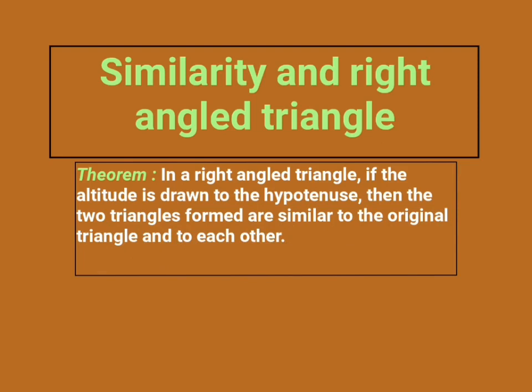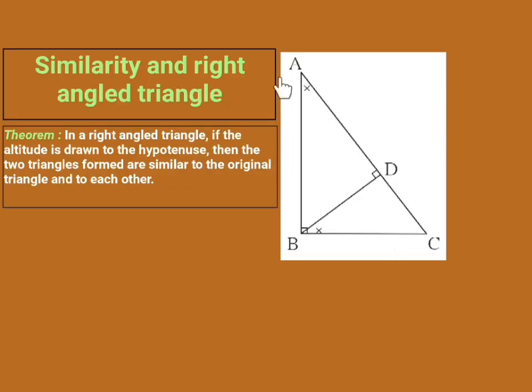The first step to prove any theorem is obviously to draw a proper diagram. Here we have to draw one right angle triangle and its altitude to the hypotenuse. Here is our diagram according to the given statement: triangle ABC which is right-angled at point B, and segment BD is perpendicular to AC, meaning the altitude is drawn to the hypotenuse.